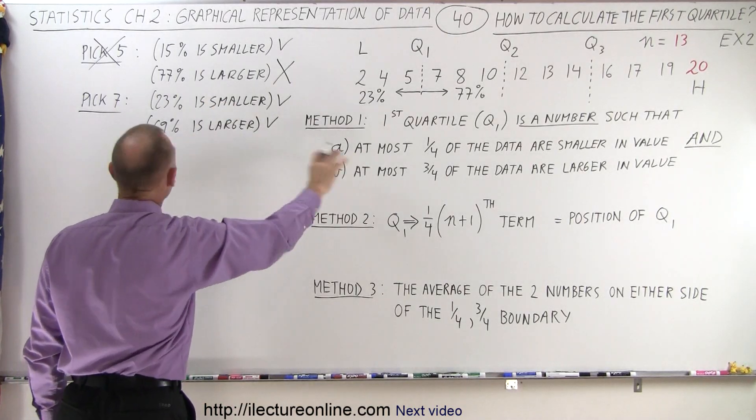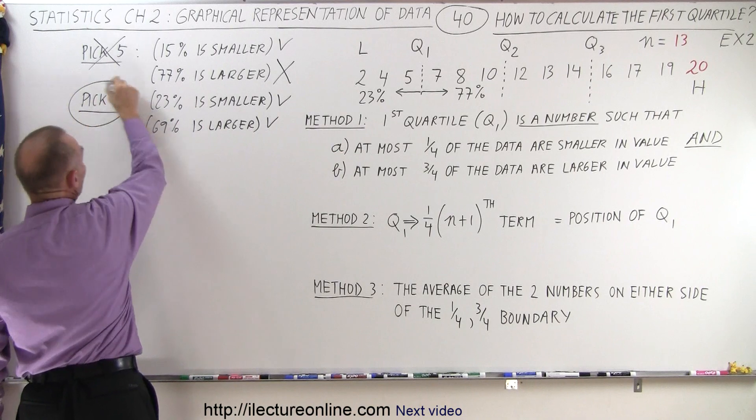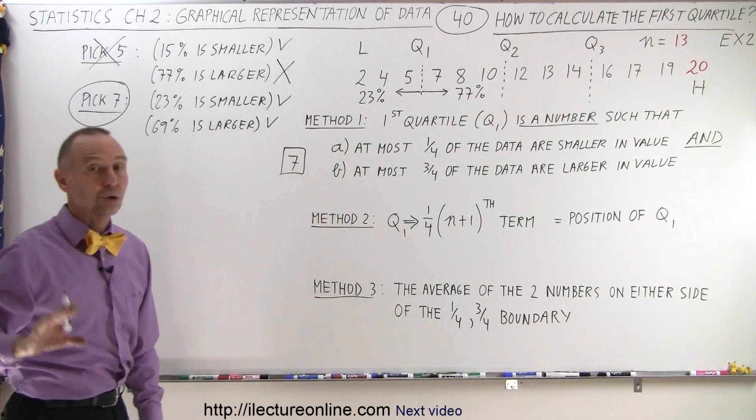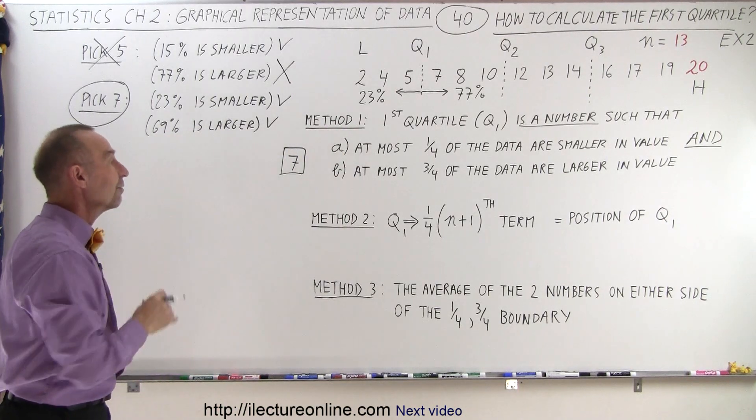69% is larger, and that also meets the second condition because it cannot be more than 75%. Since both A and B are met, 7 is the right pick. So for method number one, 7 represents the first quartile, no longer 5 like we saw in the previous video.